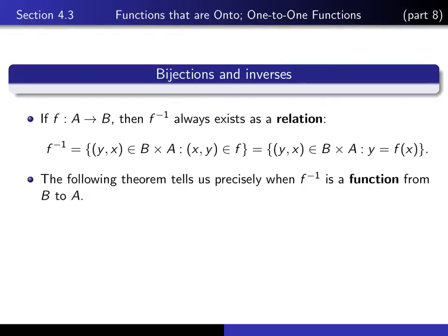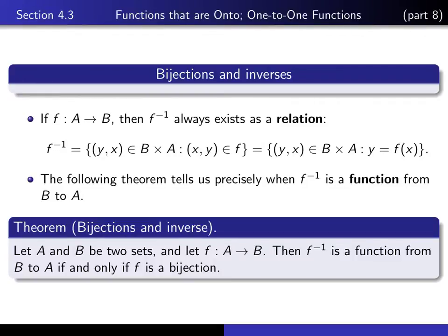But if we impose the right condition on f, then f inverse is actually a function from B to A, and the following theorem tells us precisely when that happens. The theorem says that if f is a function from set A to set B, then f inverse is actually a function from B to A, if and only if f is a bijection. The main thing we're going to do in this lecture is write a proof of this theorem.